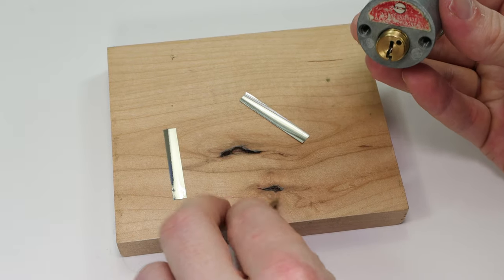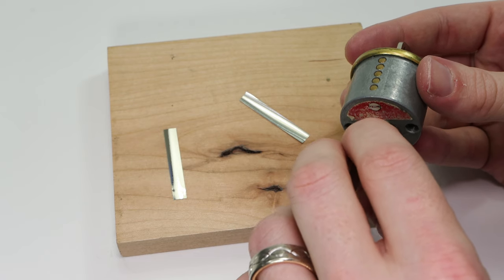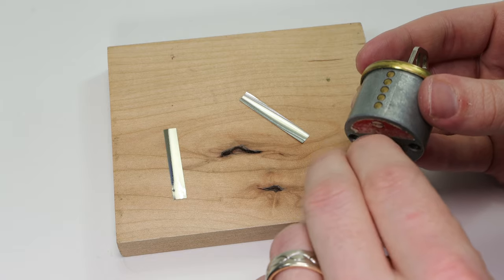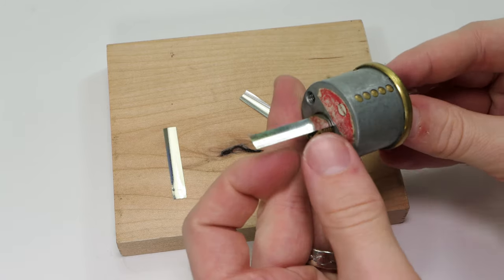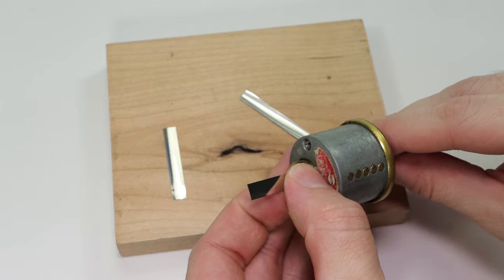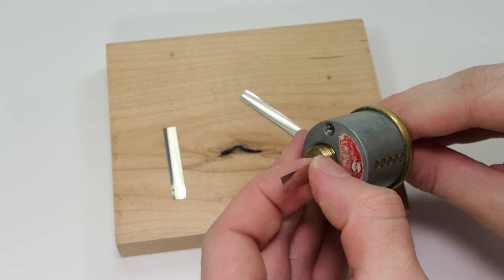But what you do is you take your core shim, you're going to align it between the plug and the driver pins, and you're going to start to scoot it back as far as you can. And then once it's all the way back, you're going to have your key blank all the way in. You're just going to keep pushing and start to withdraw your key blank little by little.